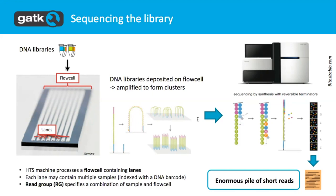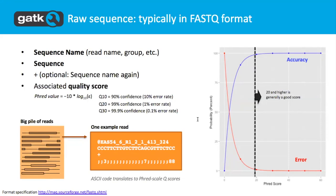There's also an option to have multiple samples sequenced on the same lane. The way we make sure we know which read came from which sample is we add a barcode — an index — to each fragment to identify which sample it came from. At the end we get this enormous pile of reads, and by enormous I mean each lane of the flow cell produces about one to ten billion reads. The way it looks is it usually comes in the FASTQ format, which is just a text file with one line of text corresponding to each read.